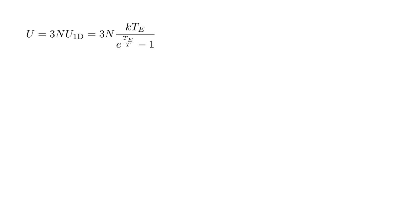For a solid of N atoms, each of which can oscillate independently in three dimensions, the average energy is three N times our one-D result. So U equals three N k T_E over e to the T_E over T minus one.